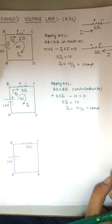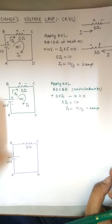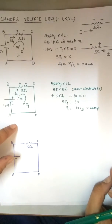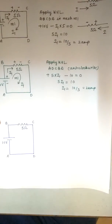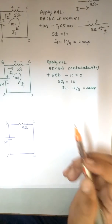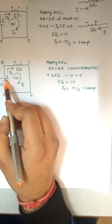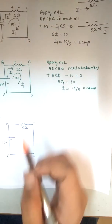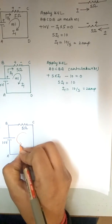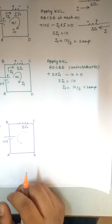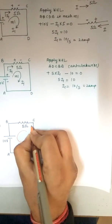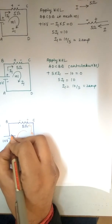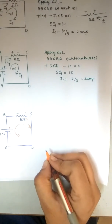Whether we apply KVL clockwise or anticlockwise while keeping the current assumption the same, the answer is the same. Now, many students have doubt here: the battery always supplies current, but here we assume the current anticlockwise — which is the wrong assumption as per our intuition. Making the polarity again: I1, positive, negative, positive, negative.